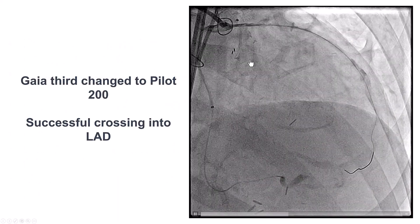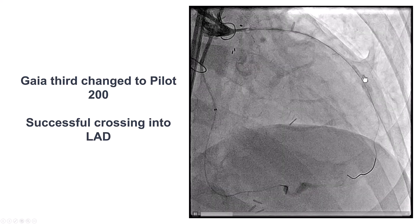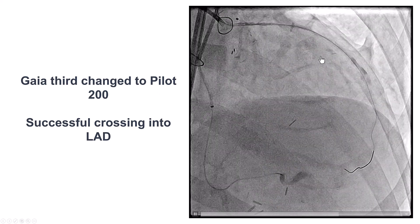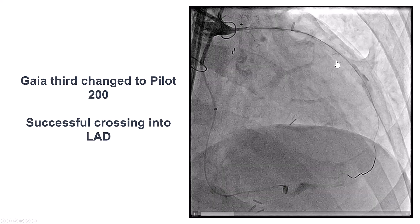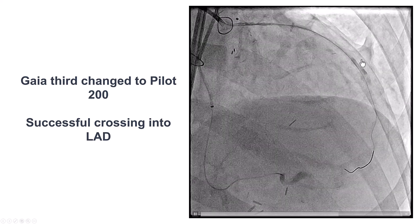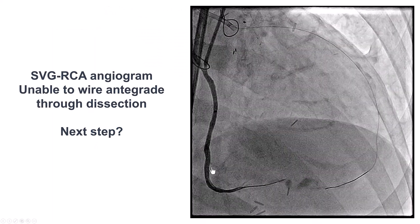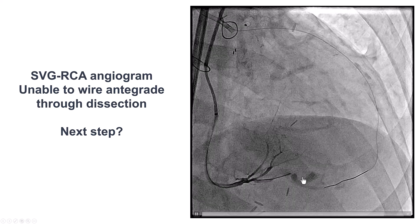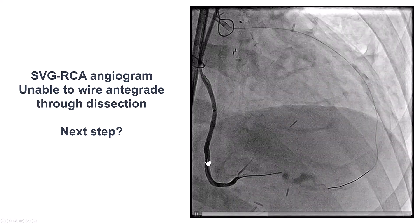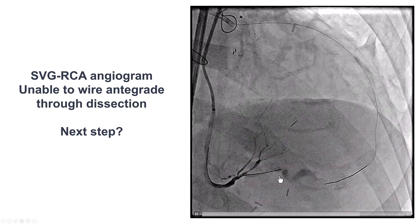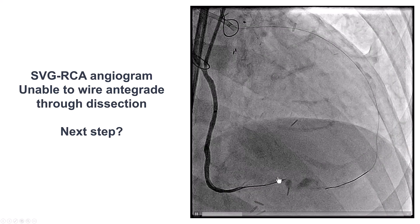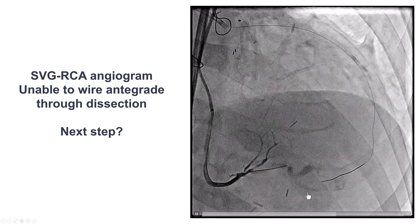We then switched to a PILOT 200 — it is always better to cross the saphenous vein graft with a polymer jacket wire, and PILOT 200 is a commonly used one. This time, the wire successfully went into the distal LAD. Unfortunately, at this point the patient developed chest discomfort and ST-segment elevation as well as depression. We can now see complete occlusion of the right PDA. We tried to wire through that area of dissection, but were unable to do so due to severe tortuosity.